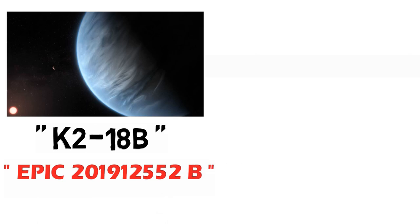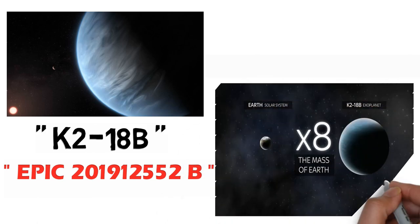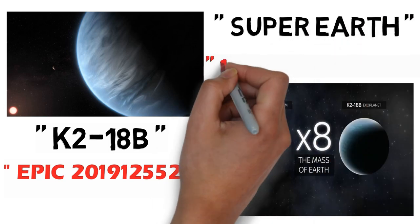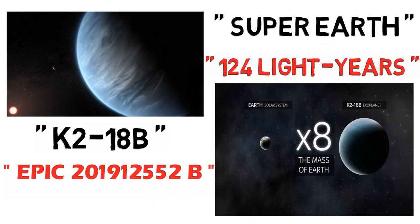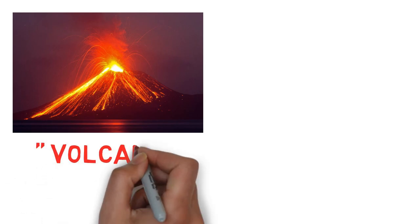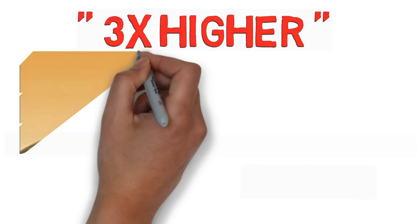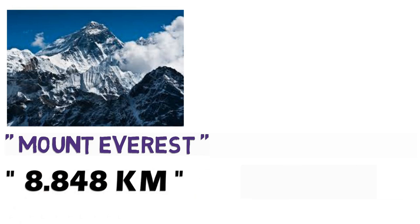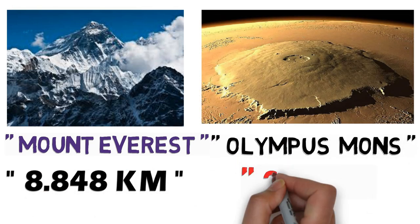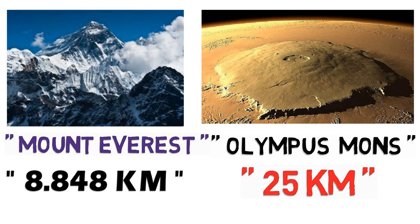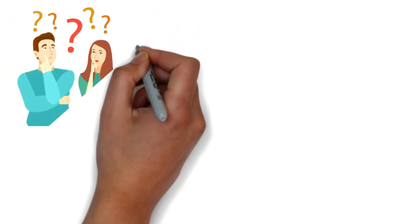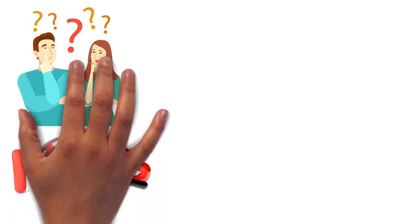And do you know there is a planet named K218b, also known as Epic 201912552b, which is 8 times the mass of our Earth, also known as Super Earth, which is 124 light years away from us. And do you know there is a volcano on Mars named Olympus Mons which is 3 times higher than our Earth's Mount Everest. The height of Mount Everest is 8.848 kilometers and the height of Olympus Mons is 25 kilometers. Wow! But how are we able to know this?